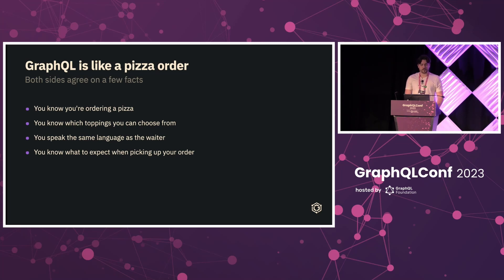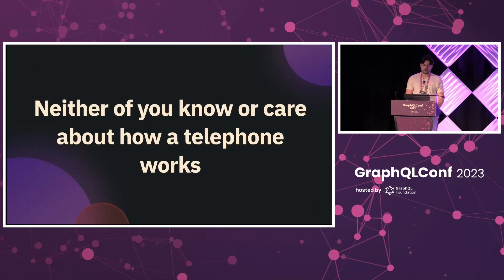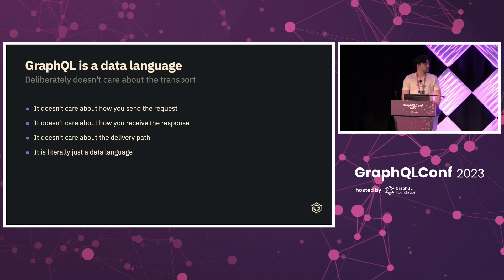We can see that there are agreements on both sides. You know you are ordering a pizza and therefore you know which toppings you can choose from. You also know that both you and the waiter speak the exact same language, and subsequently you know exactly what to expect when picking up your order — a pizza with the toppings you communicated over the phone. However, neither of you know or care about how the telephone works. Yet without it, you wouldn't be able to communicate the pizza order. Synonymously, GraphQL itself deliberately does not care about the transport. It doesn't care about how you send the request, how you receive the response, or what is the delivery path — all of this is completely out of GraphQL scope. It is quite literally just the data language.